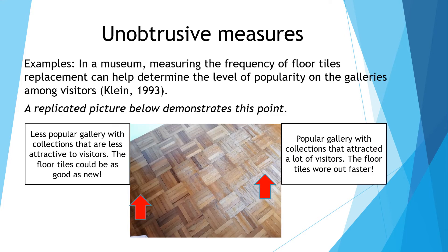Here I try to replicate an example done by Klain in 1993 in a museum, where they measure the frequency of floor tiles replacement in order to determine the popularity of the galleries among the visitors. As you can see, the right-hand side of the floor tiles have a lot of scratches, indicating that this area has a lot of visitors. But the one on the left side is as good as new, which probably indicates that it's not popular among visitors.